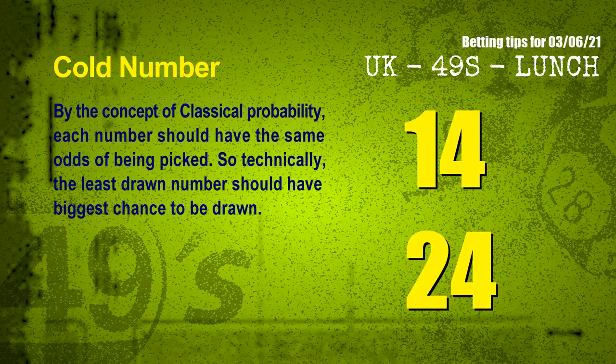By the concept of classical probability, each number should have the same odds of being picked. So technically, the least drawn number should have the biggest chance to be drawn. We count thousands of results and find out that the coldest two numbers for the next draw will be 14 and 24.